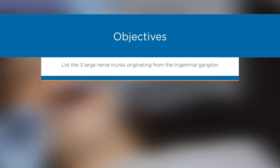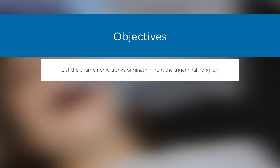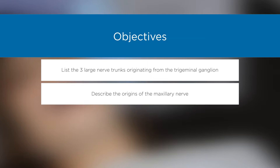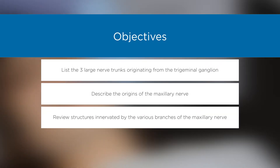Objectives: List the three large nerve trunks originating from the trigeminal ganglion. Describe the origins of the maxillary nerve. Review structures innervated by the various branches of the maxillary nerve.